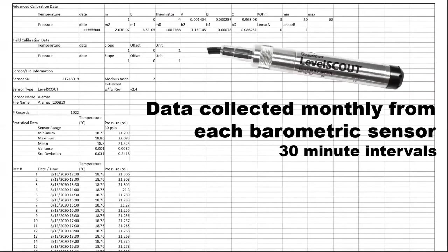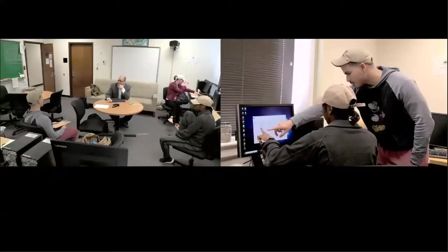We're using Level Scout as the brand for our sensors, both in terms of what's in the well itself and barometric sensors, collecting data on a 30-minute interval. Our 13 wells are being collected every 30 minutes, and then once a month we go out, collect that data, and convert it into a uniform well depth.